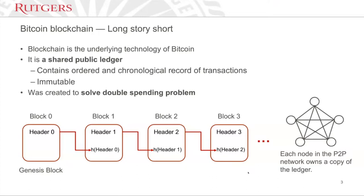That's why blockchain has its function of immutability. The technical details of why it's so robust will come after I introduce the concept of proof of work. But intuitively, if anyone changes anything on any block, the headers won't match, and the content cannot match with other users' ledgers — that's why blockchain is immutable.